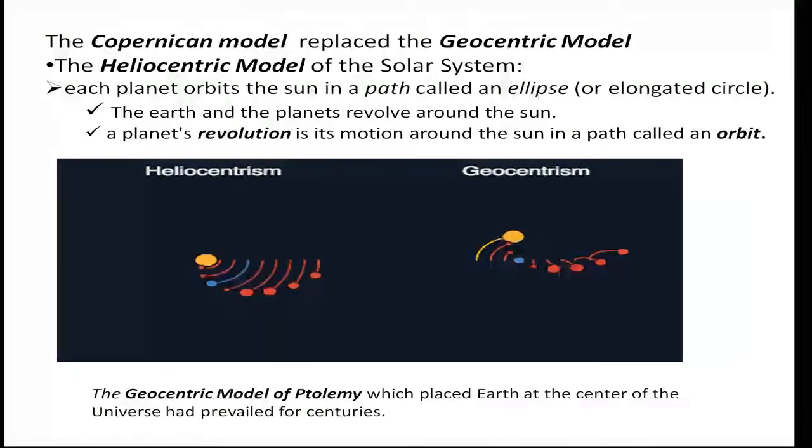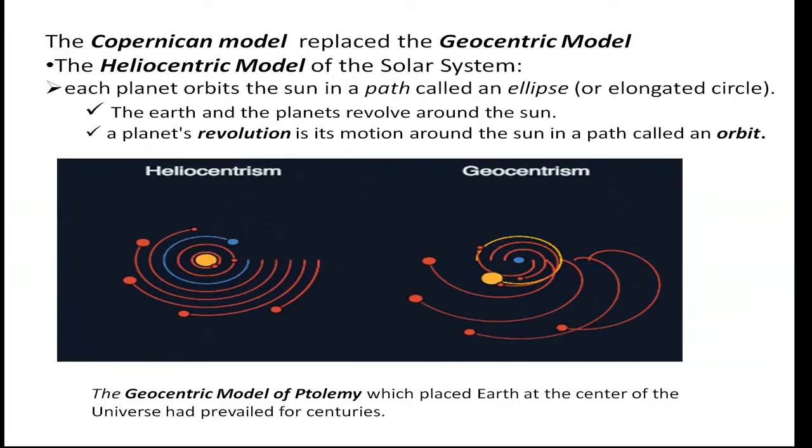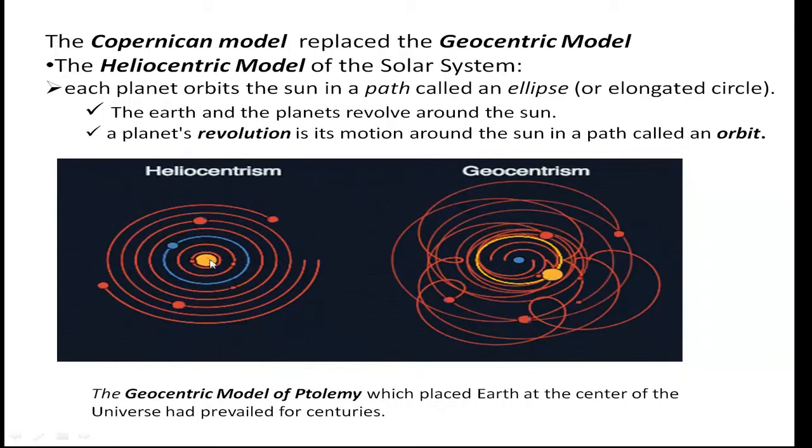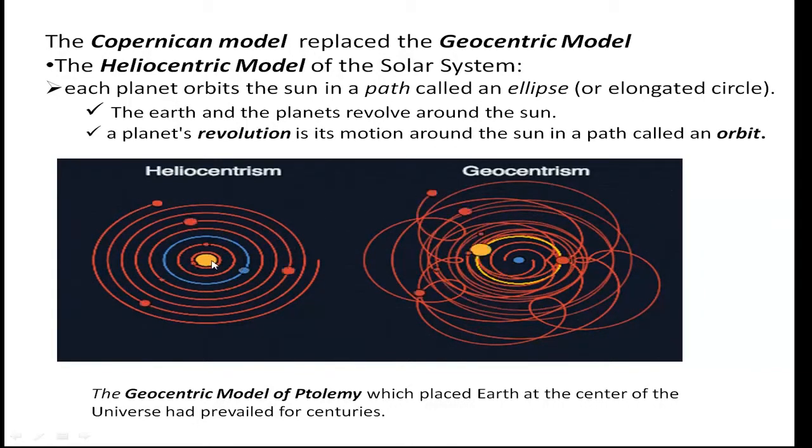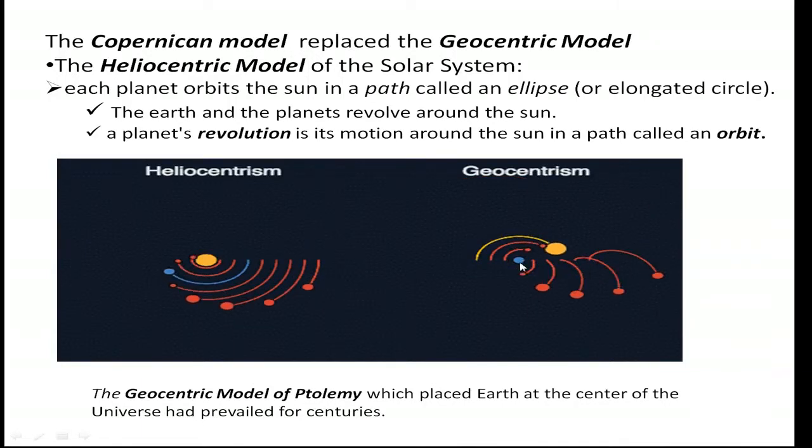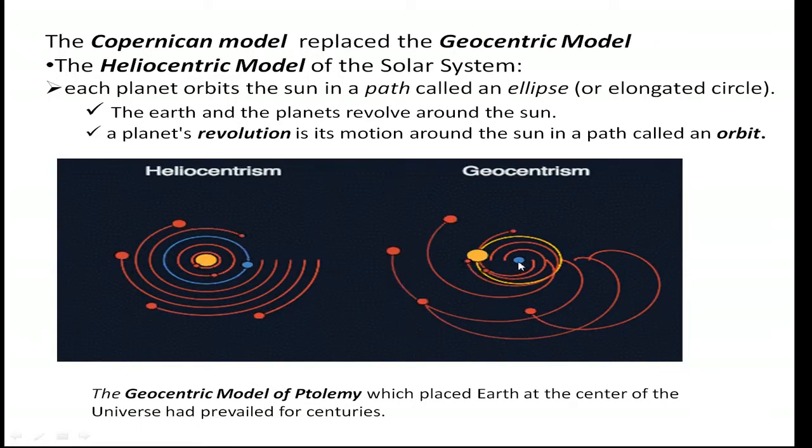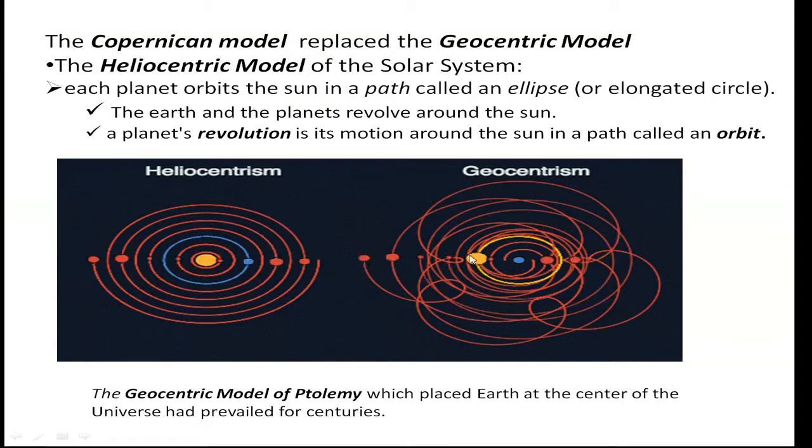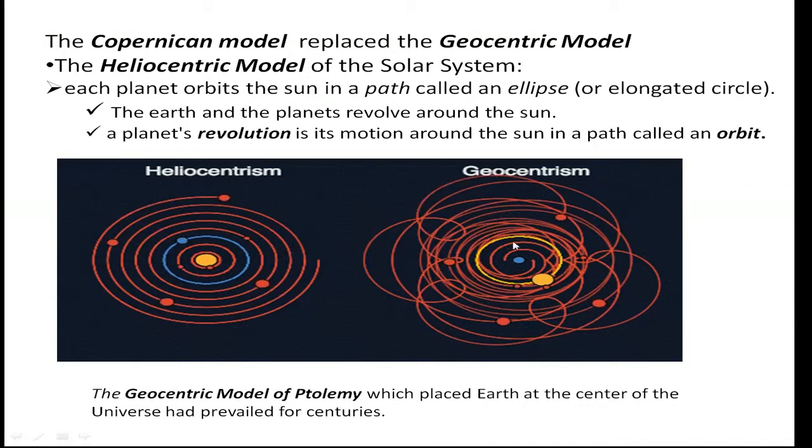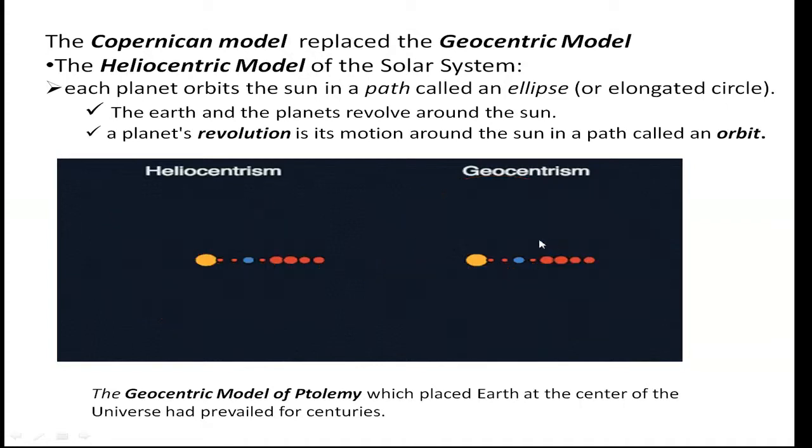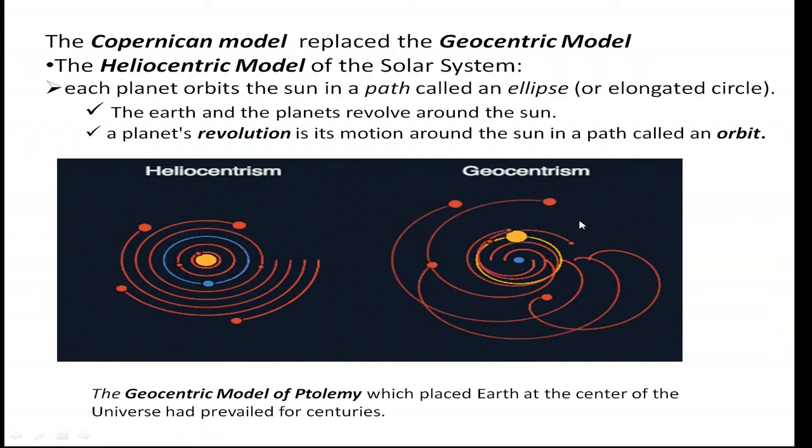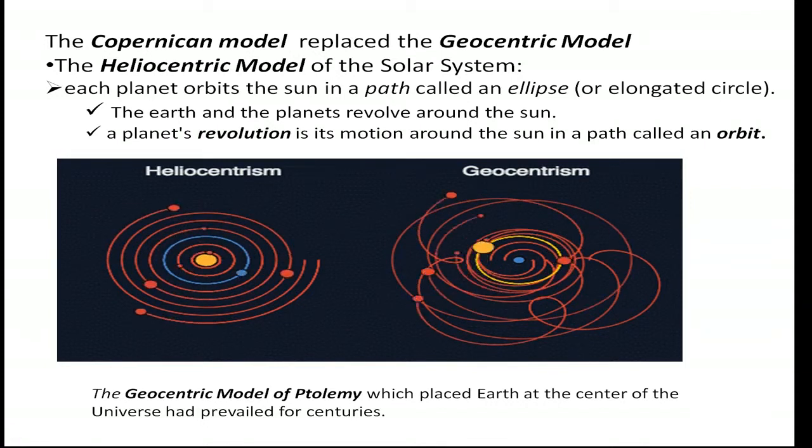We are talking about the two prevailing models of the solar system. The heliocentric model places the sun at the center of the solar system, while the geocentric model places the Earth at the center. If you consider these complex orbits, both models would predict the location of the planets at different times throughout the year.